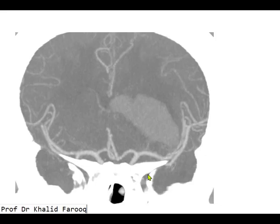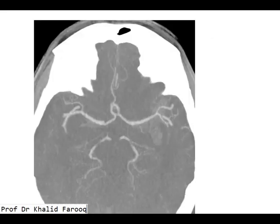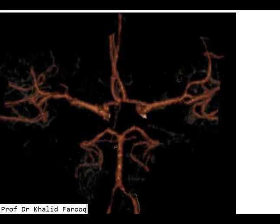Here we can see the MIP images. This is the supraclinoid portion of the internal carotid arteries, and here we have the anterior cerebral arteries and middle cerebral arteries on both sides, and the posterior cerebral arteries on either side — anterior and middle cerebral arteries.